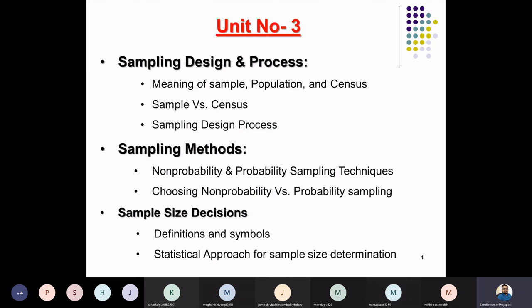In statistical methods we have three ways, three methods for the purpose of sample size determination: sample size determination through the interval approach, sample size determination through the mean, and sample size determination through the proportions. We are going to see the formulas and different sums with specific examples, one sum each.